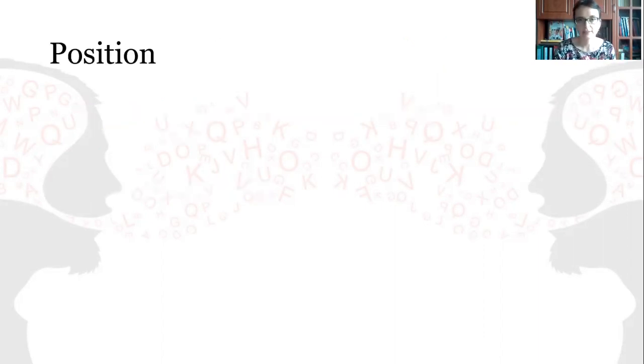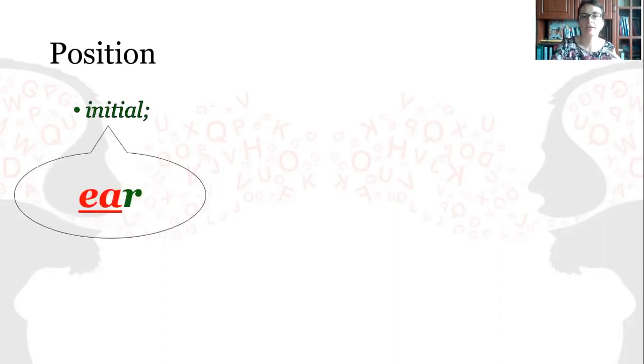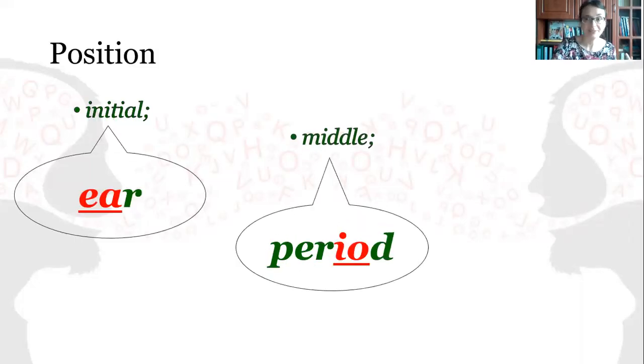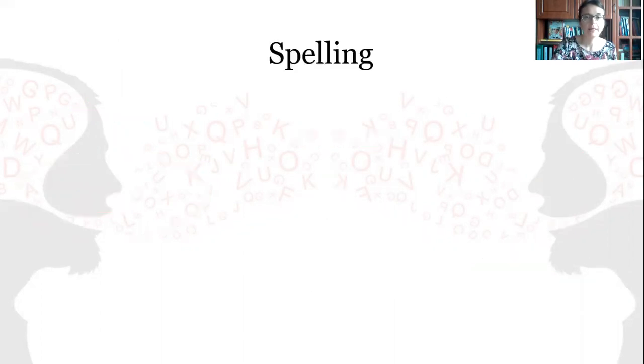Now, in what position does it occur in a word? It can occur in initial position as in ear, in middle position as in period, and in final position as in here.